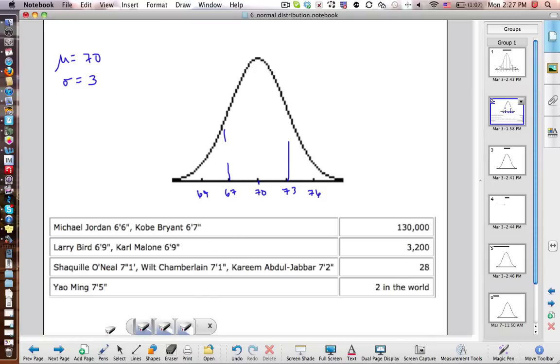Now, a couple of famous basketball players like Michael Jordan, 6 foot 6, that is 78 inches, which would mean he is approximately right here, which is a little bit bigger than two standard deviations above the mean. Actually, almost three standard deviations above the mean. And Kobe Bryant, 6 foot 7, again, three standard deviations above the mean. You can see that Yao Ming, 7 foot 5, that's way tall. That's about six standard deviations above the mean. There's about two people in the world that are taller or have equal height to him.